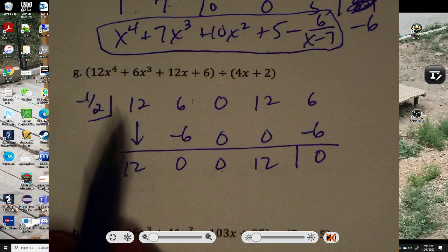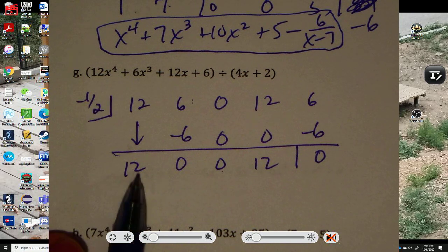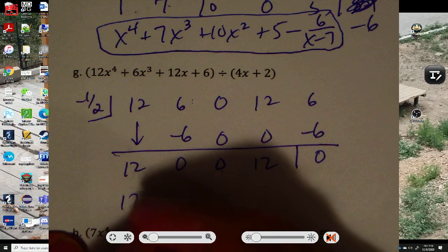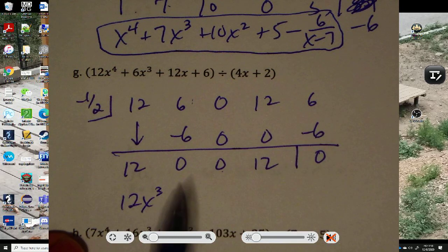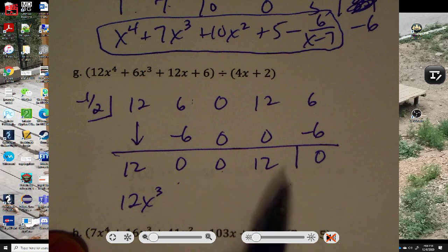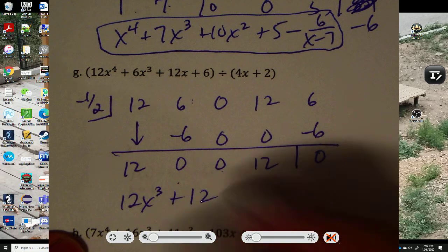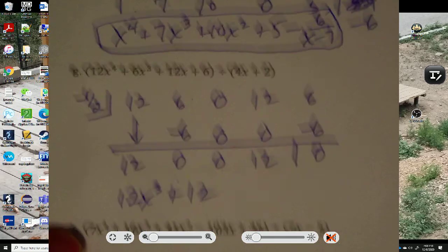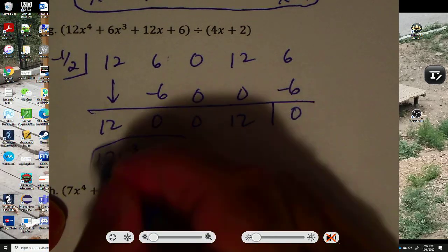So this is x to the fourth. So this is x to the third. 12x to the third plus 0x squared plus 0x plus 12. Plus 12. And there is no remainder. So that is my answer.